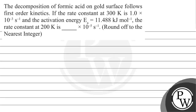Let's read this question. The question says: the decomposition of formic acid on a gold surface follows first order kinetics. If the rate constant at 300 Kelvin is 1×10⁻³ per second and the activation energy is 11.488 kilojoule per mole, the rate constant at 200 Kelvin is dash ×10⁻⁵ per second. Round off to the nearest integer.